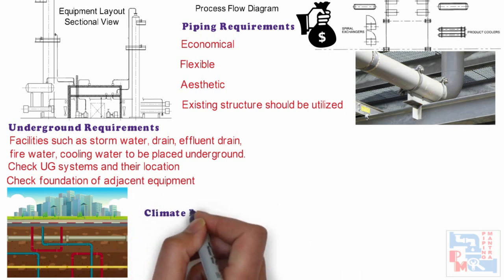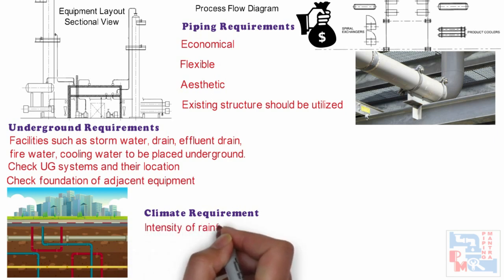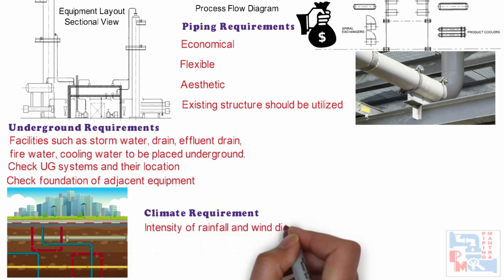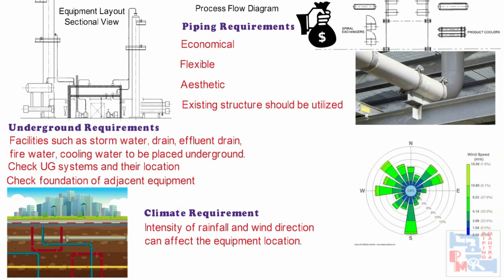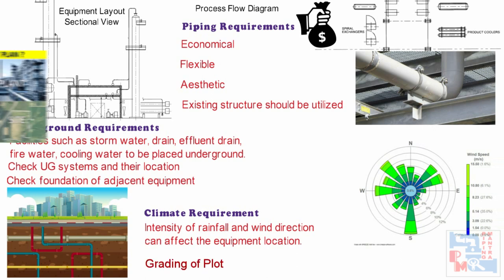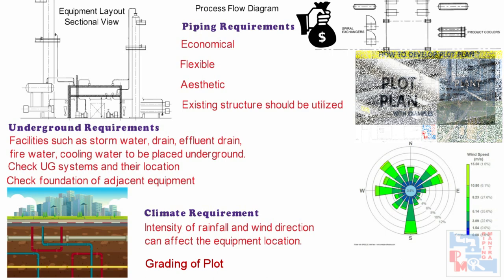Let's talk about some climate requirements. Intensity of rainfall and wind direction can affect the equipment location. The location of furnace, cooling tower, flare, and incinerator are decided by wind direction, and the location of the effluent plant is decided by the grading of the plot. You can see our video on plot plan where we have discussed all these points in detail.